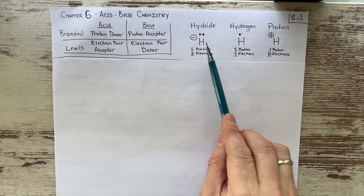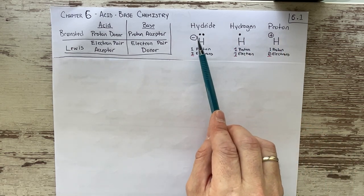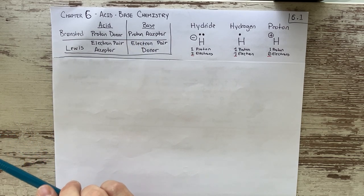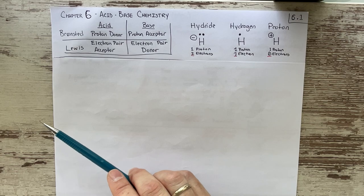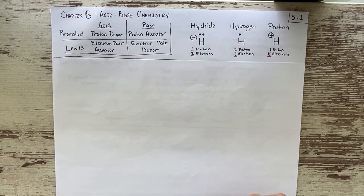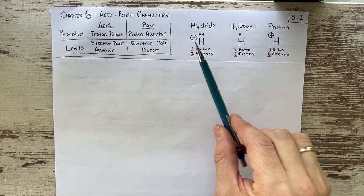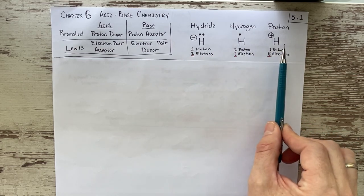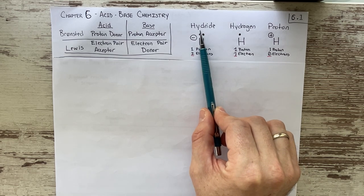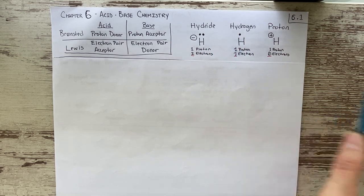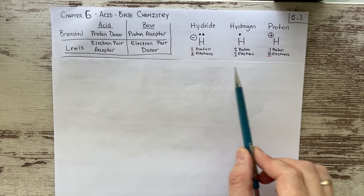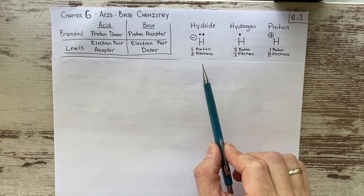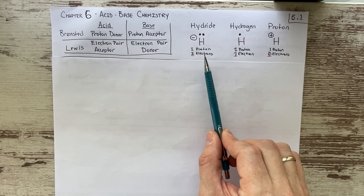Before we get into the Lewis definitions, let's go over a couple of other terms. When I say proton, a lot of you will probably identify acids as hydrogen acceptors or hydrogen donors. There are a couple of differences between hydrogens and protons. Here I have three different hydrogens: one we call a hydride, one we call hydrogen, and one we call a proton. The difference among these is the number of electrons held in the orbital of these atoms.